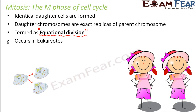Mitosis occurs in eukaryotes and is not seen in prokaryotes, because prokaryotes do not have nuclear membrane, nucleus, or nucleolus. Why you need nuclear membrane and nucleolus for mitosis — that you will get to know when we study the process of mitosis in detail.